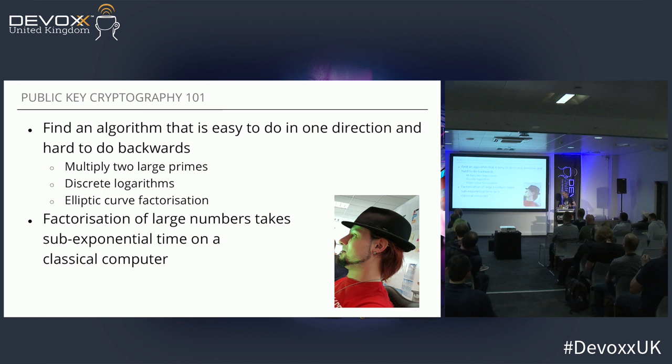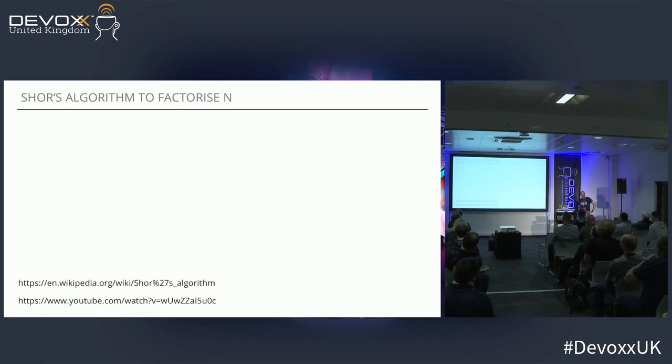Essentially, cryptography is based on the fact that you find something that's easy to do in one direction and hard to do in the other direction. Most cryptography algorithms rely on the fact that it's easy to multiply two numbers together, but it's difficult to work out what the two factors of any given number are. So, what is Shor's algorithm? Well, Shor's algorithm is a way of factorising large numbers.